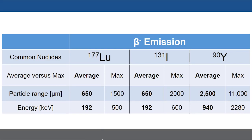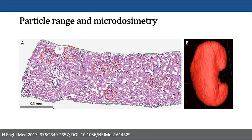Looking at differences between beta-emitting radionuclides, the lutetium-177 beta range is almost half a millimeter, compared to yttrium-90 at 2.5 millimeters average range. These ranges are important when you look at the histology and microstructure of tissues — for example, the distances between Bowman's capsules, convoluted tubules, and the loop of Henle in the kidney. So half a millimeter versus 2.5 millimeters is meaningful and clinically relevant.